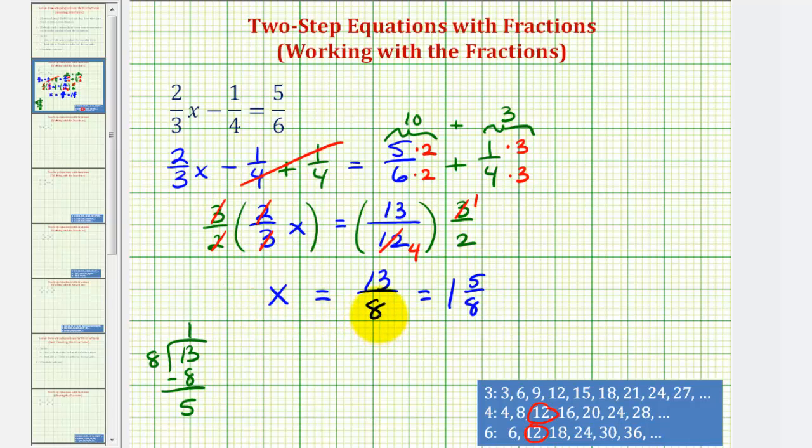Now to verify the solution, we'll substitute x into the original equation and make sure it satisfies the equation. So we would have two-thirds times thirteen-eighths minus one-fourth equals five-sixths.